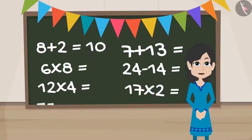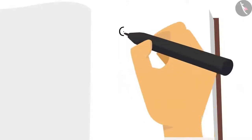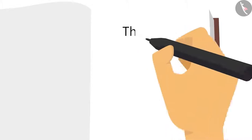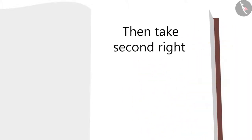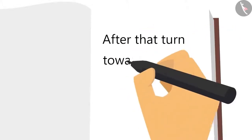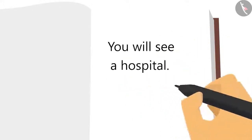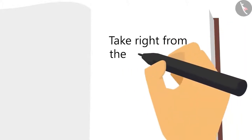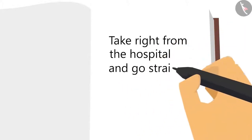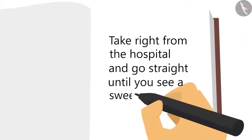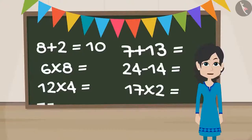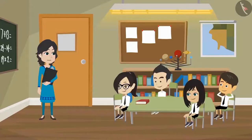Okay children, please open your notebooks and I will give you the directions to reach my home. Go straight as you exit from our school gate. Then take a second right, after that turn left and go straight. You will see a hospital. Take right from the hospital and go straight until you see a sweet shop. My home is right in front of it. Now I am leaving, be there at 6 o'clock.